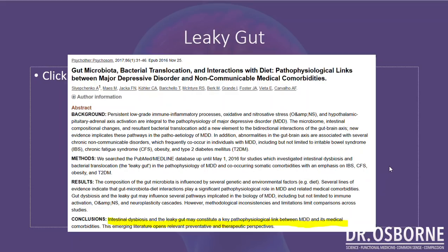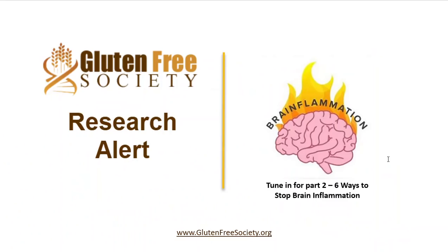The way you protect and preserve yourself from leaky brain: if you are gluten sensitive, you need to change your diet and get gluten-free as quickly as possible. In the next video — part two of this series on brain inflammation — we'll talk about the six ways to stop brain inflammation. Make sure you subscribe and hit the bell for notifications. This is Dr. Osborne with Gluten-Free Society. You can subscribe by visiting glutenfreesociety.org, where we'll send you our Gluten-Free Survival Guide and Kit at no cost, because our goal is to help you navigate this diet and restore your health.